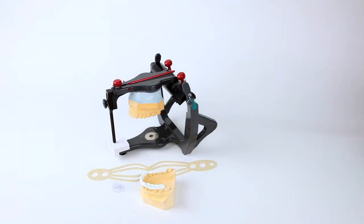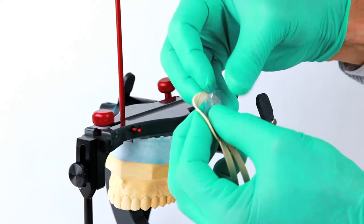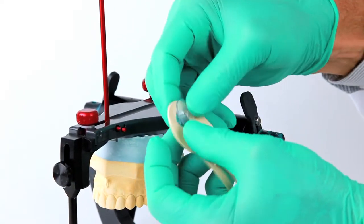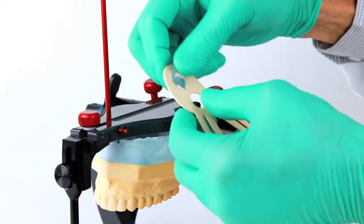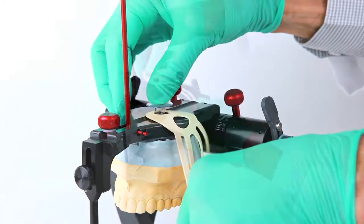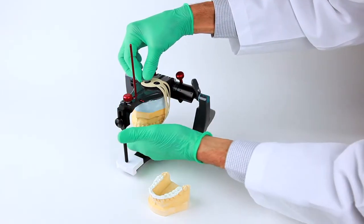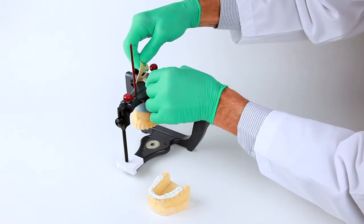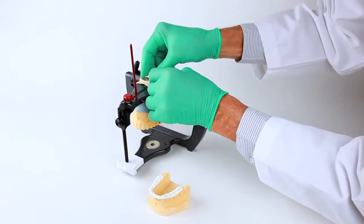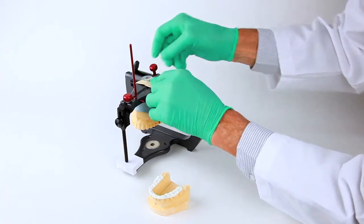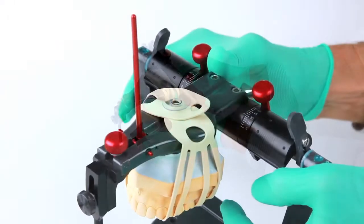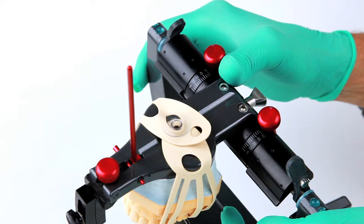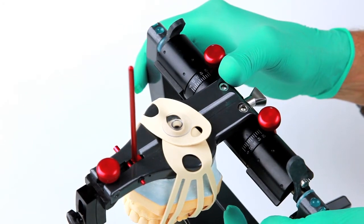Once the maxillary cast has been mounted with a mounting jig or facebow registration, the flexi-mount is attached by placing one end of the two large holes on the end of the flexi-mount over the mounting button. The other hand draws the free end of the flexi-mount under the cast to the other side of the articulator arm, and it attaches to the same mounting button as the opposite end of the flexi-mount was previously attached.